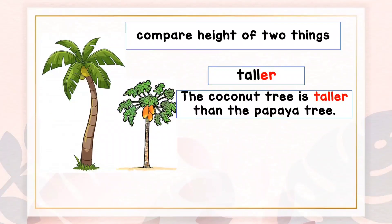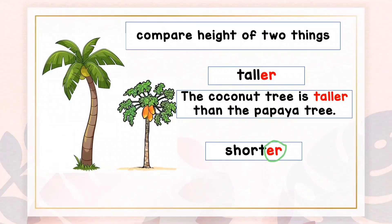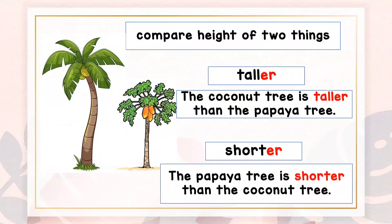The coconut tree is taller than the papaya tree. The papaya tree is short. We add -er to compare. The papaya tree is shorter than the coconut tree.